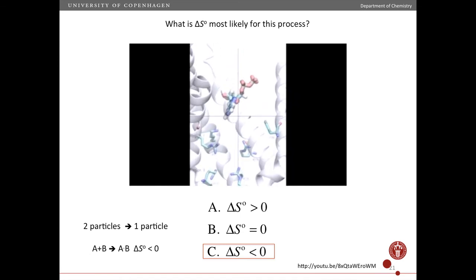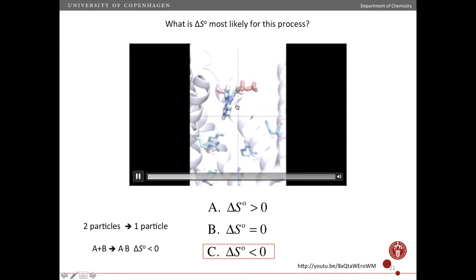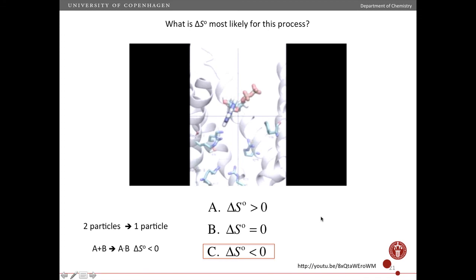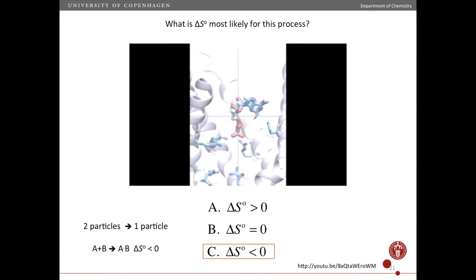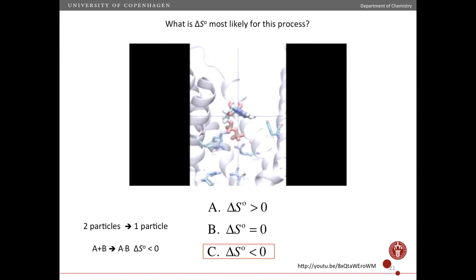And as you form hydrogen bonds and other kinds of intermolecular interactions between the molecule and the protein, then it really effectively becomes one particle. So you go from two to one particle, and the entropy decreases.